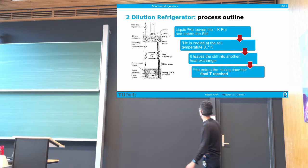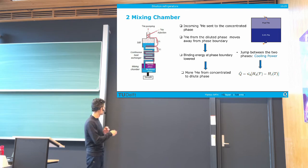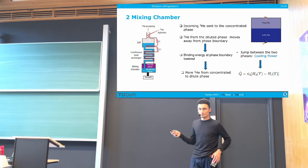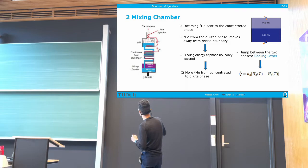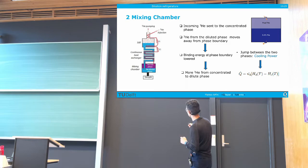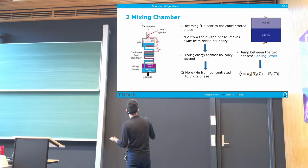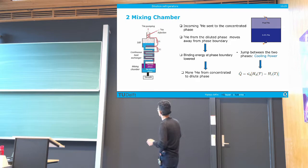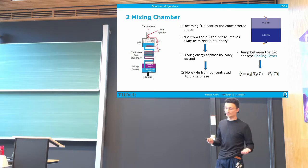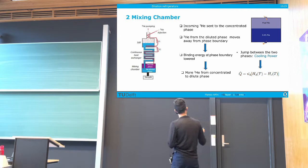So what is happening in the mixing chamber? Helium-3 enters the mixing chamber from the concentrated phase. If we are able to extract atoms of helium-3 from the dilute phase at the bottom of the mixing chamber, then helium-3 atoms move away from the phase boundary. This lowers the binding energy at the boundary, taking the system out of equilibrium, so helium-3 atoms jump from the concentrated phase to the dilute phase. This jump costs kinetic energy, so we are producing cooling — this is the cooling power of the system.